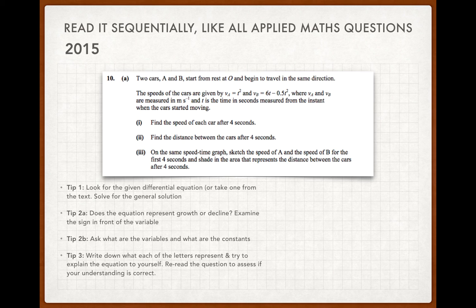I'll give you a hand with the third part. On the same speed-time graph, sketch the speed of A and the speed of B for the first four seconds, and shading the area that represents the distance between the cars after four seconds. Remember, for a speed-time graph, the area under the curve is the displacement. So the area under the curve for the first one is the displacement covered by the first one. The area under the curve for the second one is the displacement covered by the second one. And the common shaded area between the two is not what you're looking for. It's actually the area that isn't shared by the two of them will be the distance between the two cars. So shade underneath both of them and the shared shaded area is not what you're looking for. You're looking for the area that one has extra to the other one. And that's the distance between the cars.